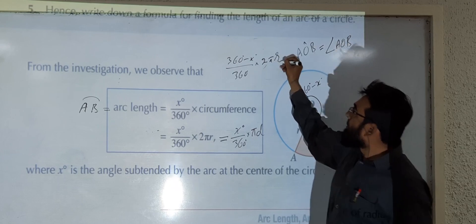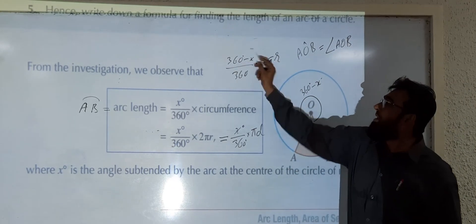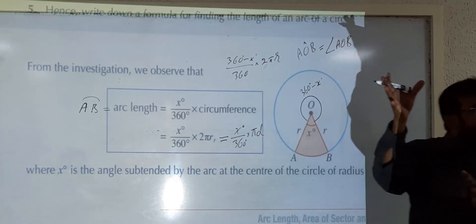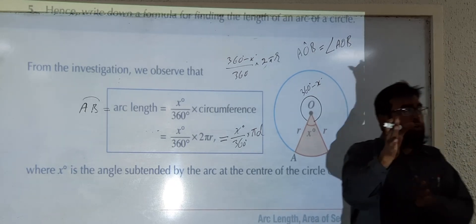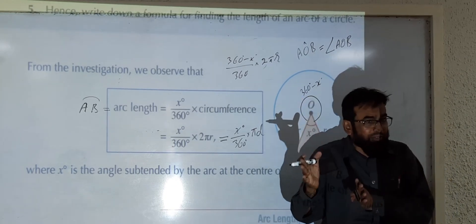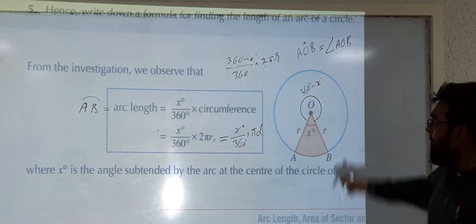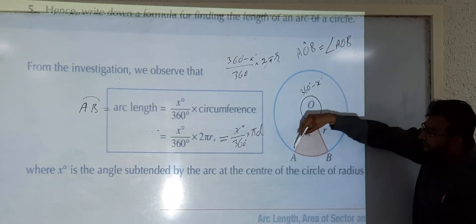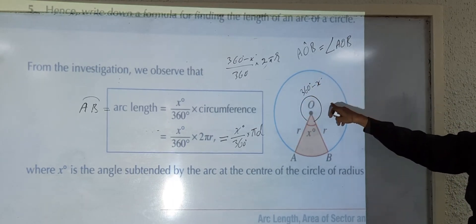So for the major arc shown in blue, the formula becomes: (360 − x) / 360 × 2πr or πd. Basically, whichever side of the arc you are finding, that corresponding angle is used. If you are finding the minor arc, use angle x. If you are finding the major arc, use angle (360 − x).